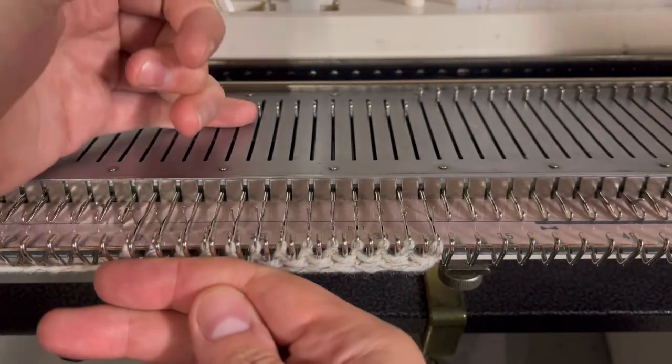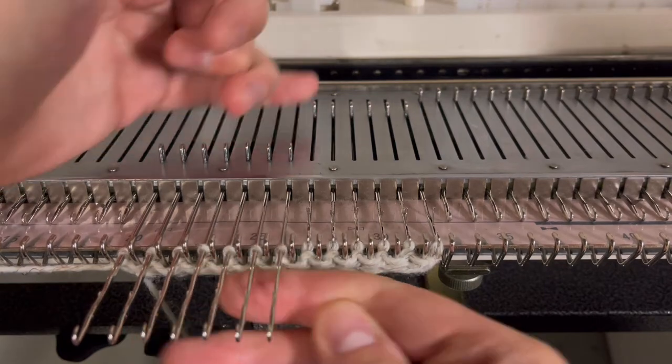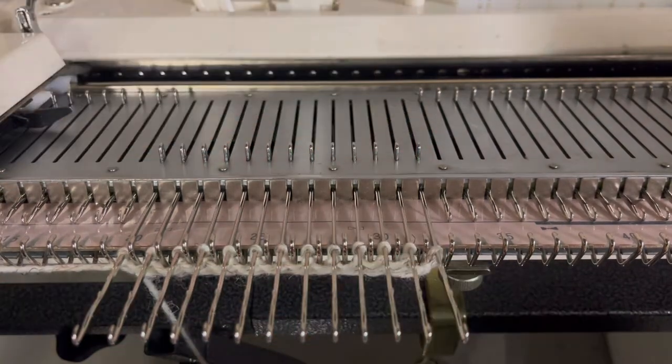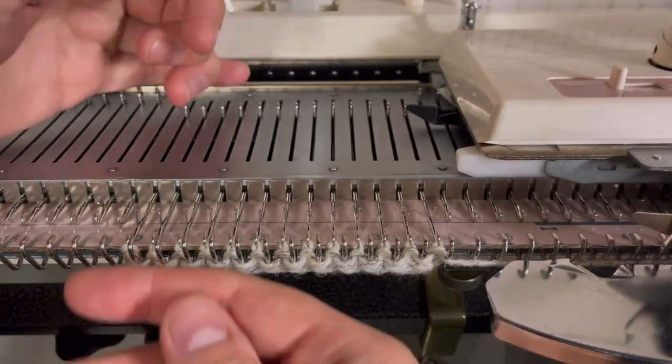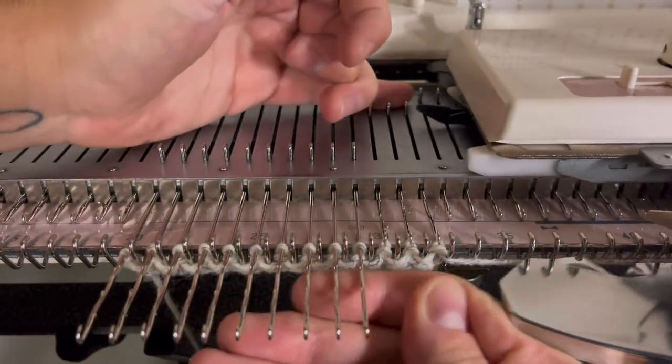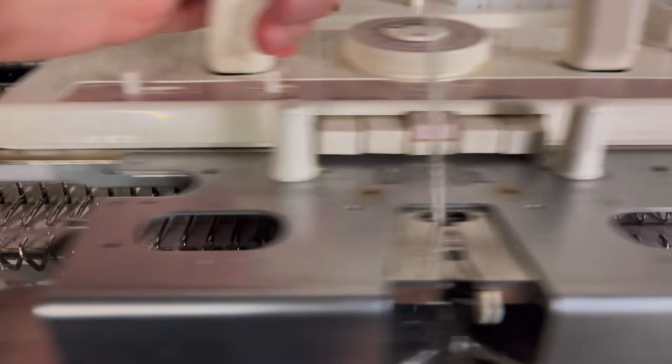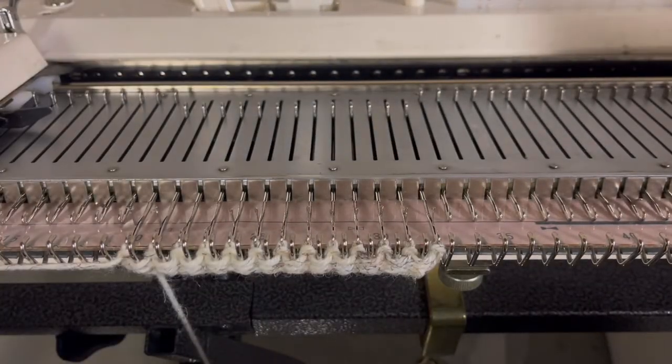Knit one row, pull all the needles to hold again, and knit back from hold, ensuring all stitches knit off cleanly. Repeat this process until enough knitting has been established so that you can hang claw weights and continue knitting.